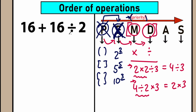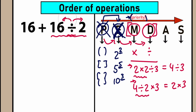We have a division sign in our question. We don't have multiplication, so we cancel that. So the first step from left to right is: no parentheses, no exponents, no multiplication — we have only division as our first step.